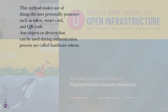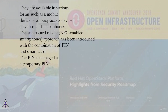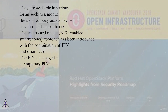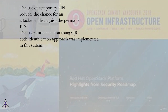The possession-based method makes use of things the user personally possesses, such as tokens, smart cards, and QR codes. Any objects or devices that can be used during the authentication process are called hardware tokens, available in various forms such as mobile devices, easy access devices, key fobs, and smartphones. The smart card reader and NFC-enabled smartphone approach has been introduced with a combination of PIN and smart card. The PIN is managed as a temporary PIN, which reduces the chance for an attacker to distinguish the permanent PIN.